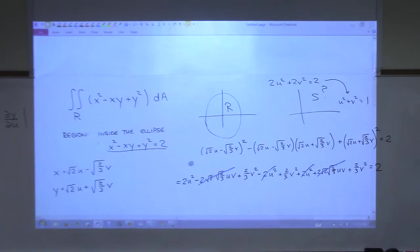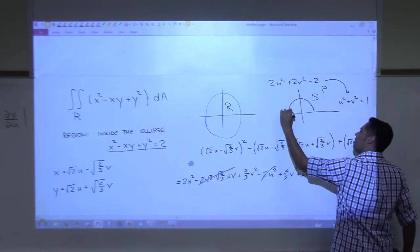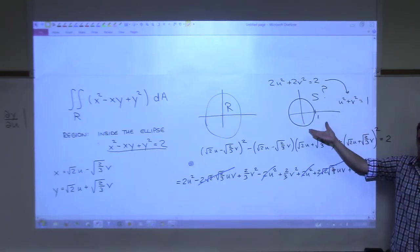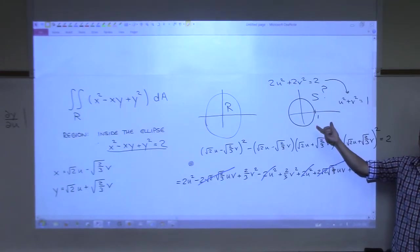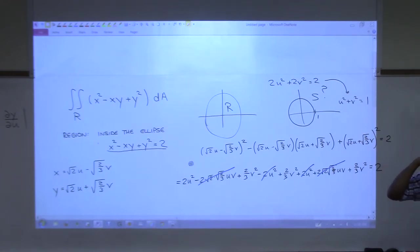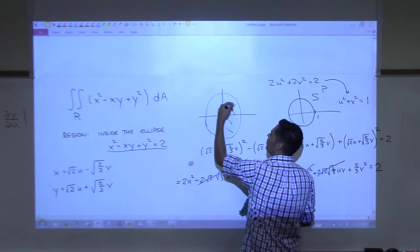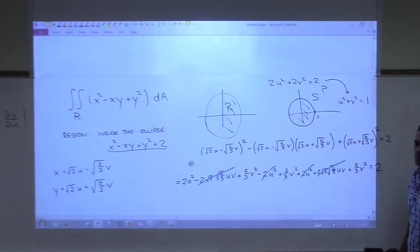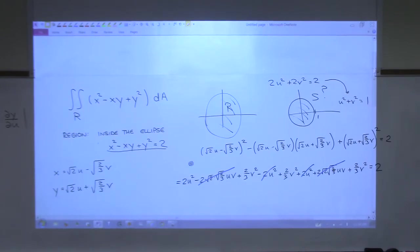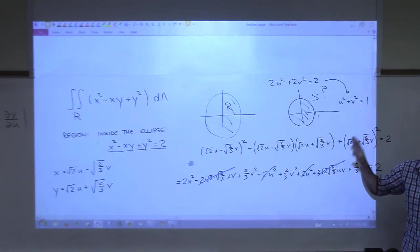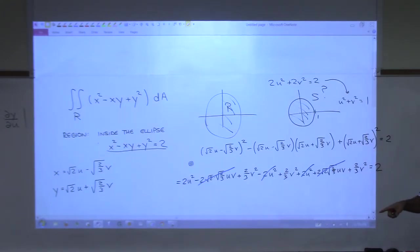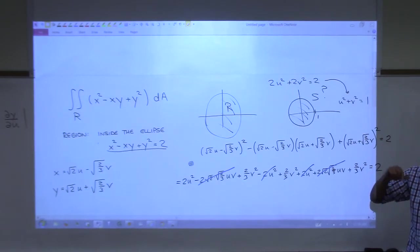The ellipse maps to the unit circle u² + v² = 1! Am I comfortable integrating over a unit circle? Yes — I'll go to polar. So I need to do a second change of variables. This region that was difficult to integrate over has become a nice polar region.